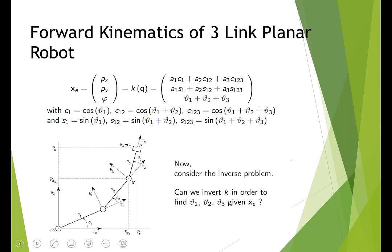To summarize: to find forward kinematics using transformation matrices, attach frames to each joint, find the transformation from each frame to the previous one, multiply them all together, and look at the last column for end effector position and the rotation block for orientation. The z position was always zero because it's a planar robot. The orientation is a single rotation of nu1 + nu2 + nu3 about Z.